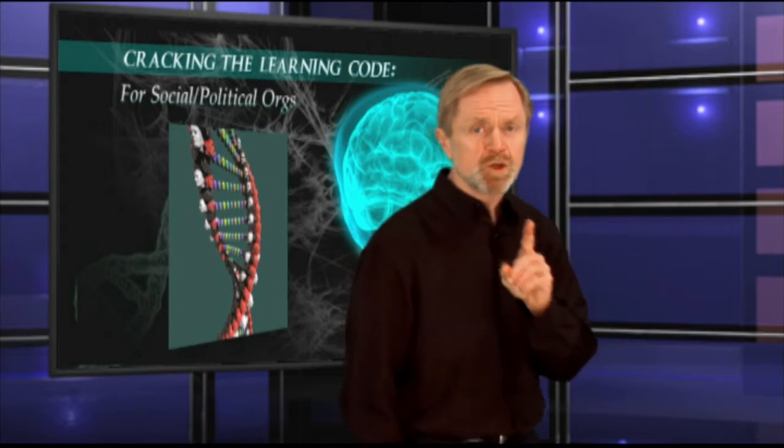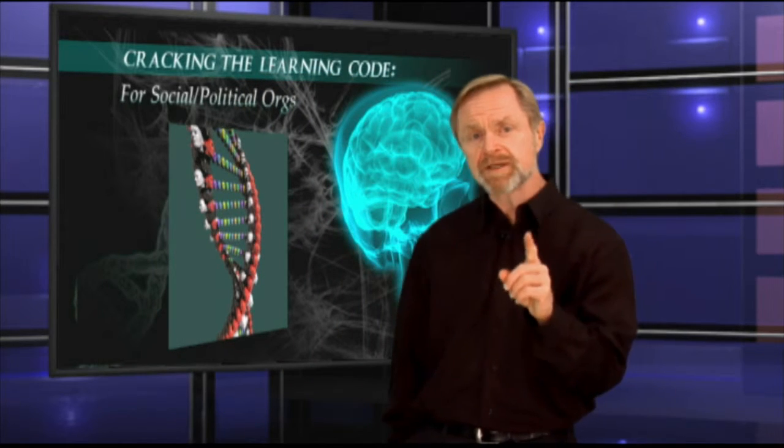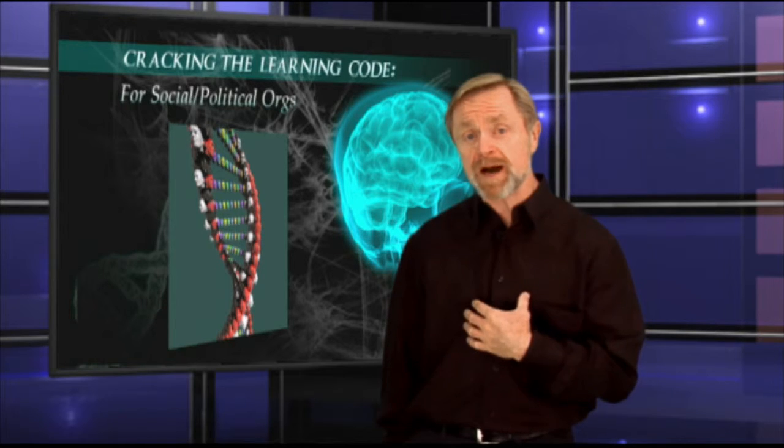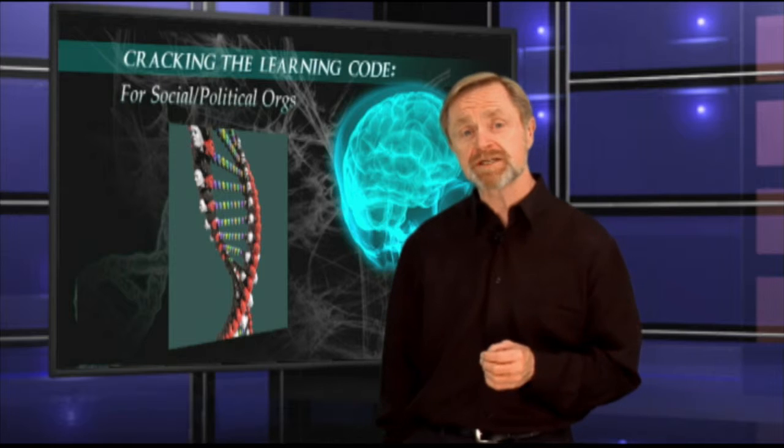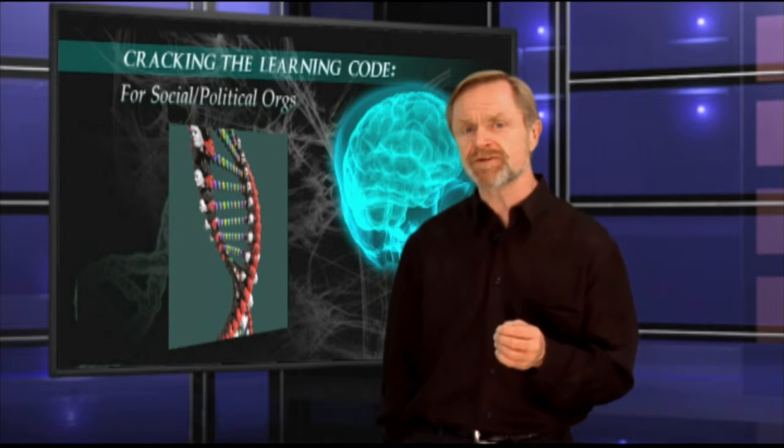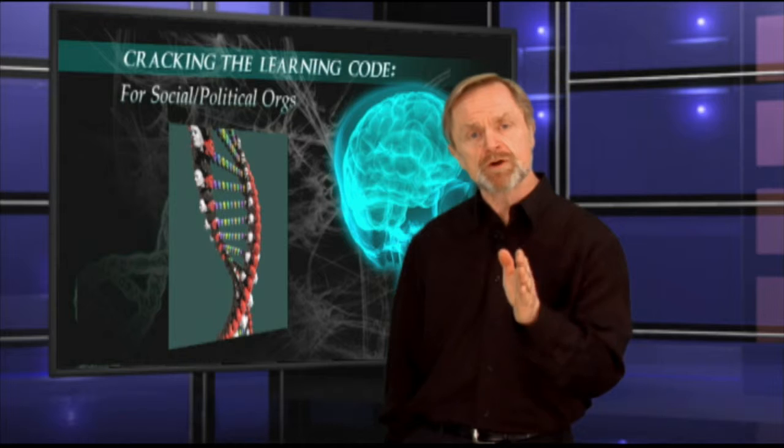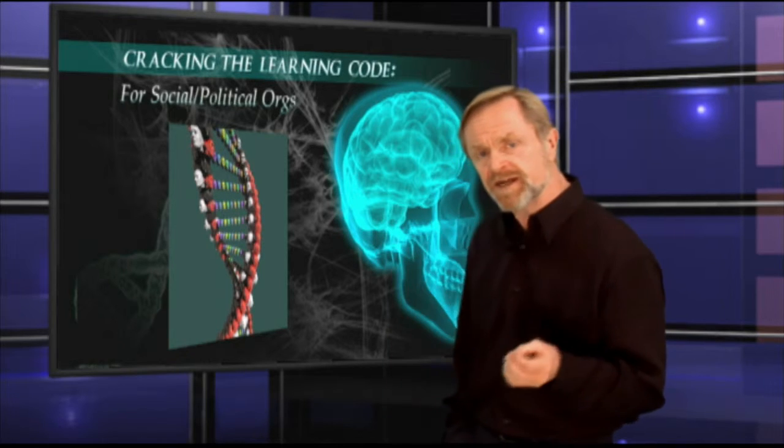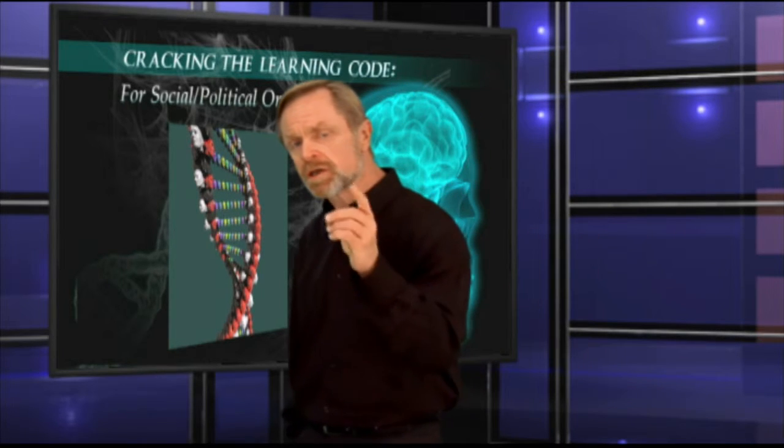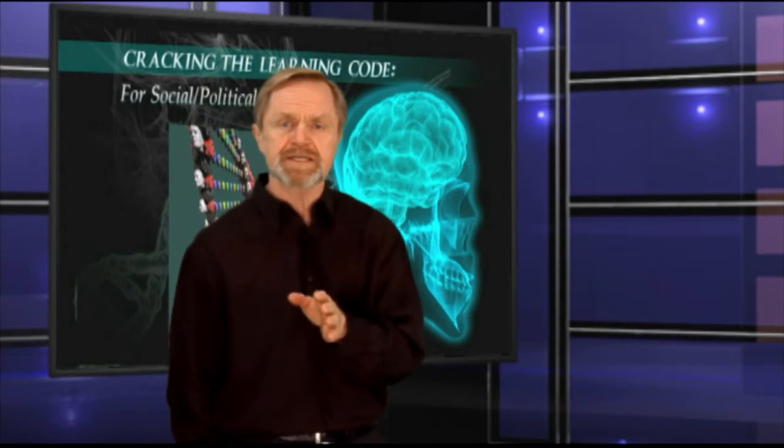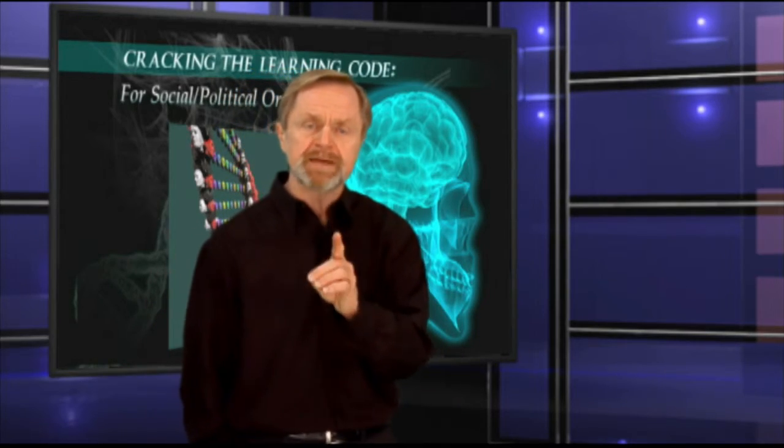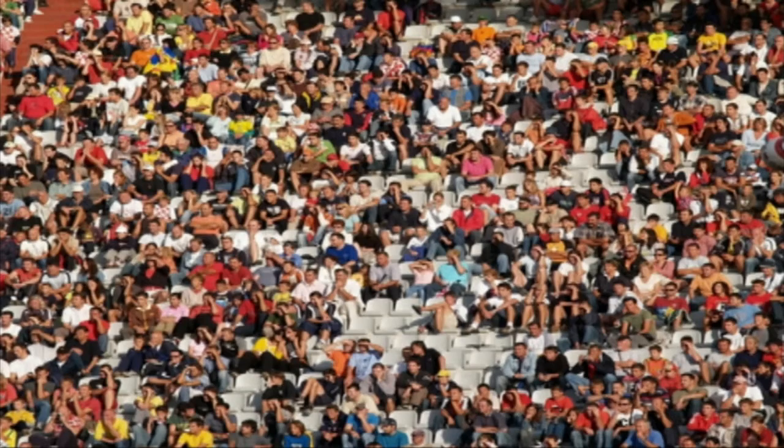But once you understand what must happen in a person's brain and their body before he or she will change their point of view or their actions, the easier it is to design programs that will affect those changes. By effectively understanding how to turn on the learning code, social and political organizations can possess the power to profoundly impact large groups of people.